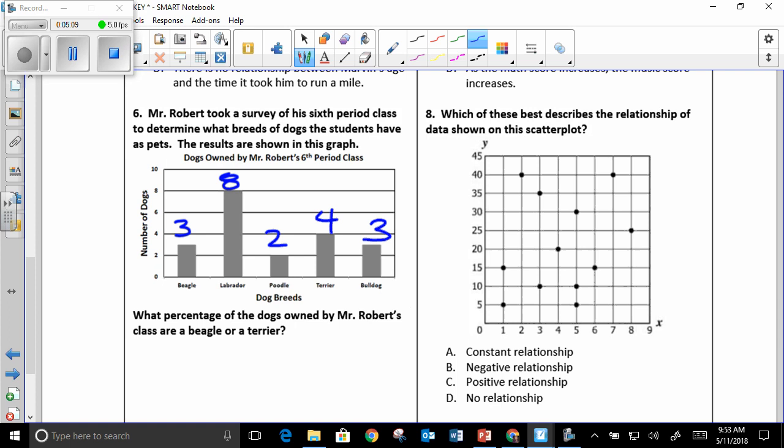What percentage of the dogs owned by Mr. Roberts class are a beagle or a terrier? Beagles were 3, terriers were 4. You have to add those together. So that's where you would get 7. You add them all up together, that's 20. You could put that into a percentage and have it equal something over 100, which would give you 35 over 100, which gives you 35 percent, or change 7 over 20 to a decimal and then convert that to a percentage.